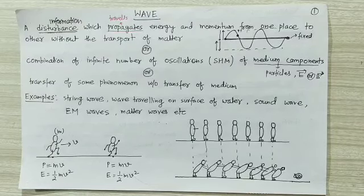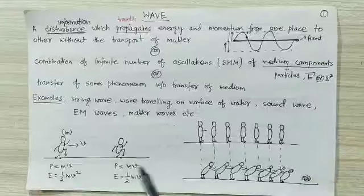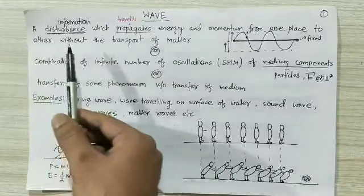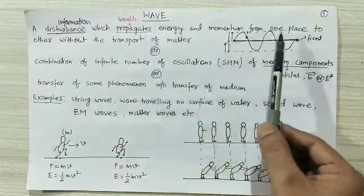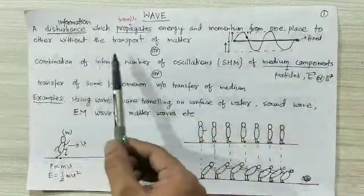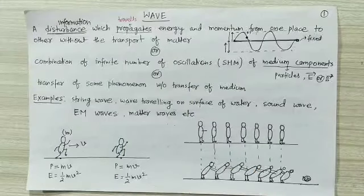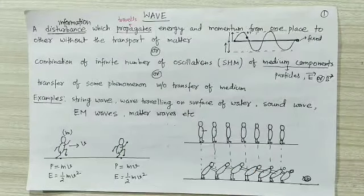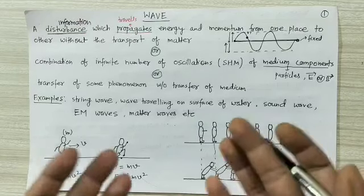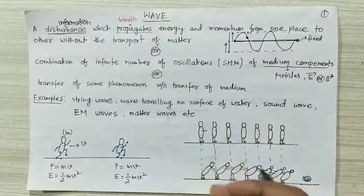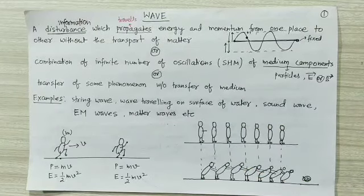Let's see the first definition of wave. What do we mean by wave? A wave is a disturbance or information which propagates energy and momentum from one place to another without the transport of matter or mass. Basically, a wave is the transfer of energy from one place to another place without the transfer of any kind of mass.